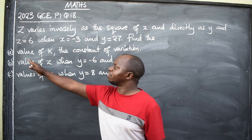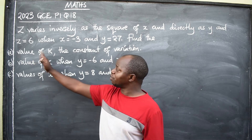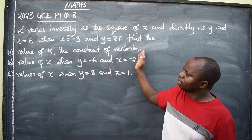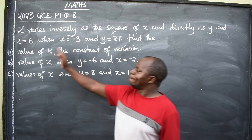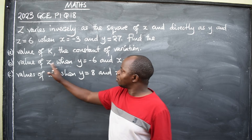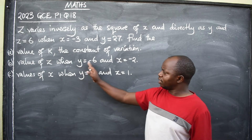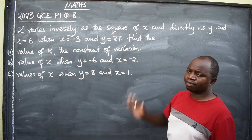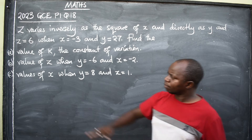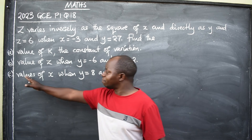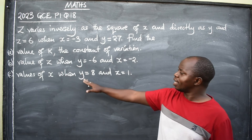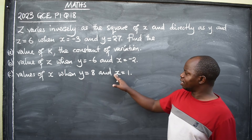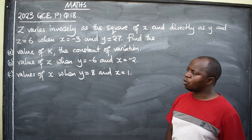Find: part A, the value of K, which is the constant of variation; part B, the value of Z when Y is equal to negative 6 and X is equal to negative 2; and part C, the values of X when Y is equal to 8 and Z is equal to 1.